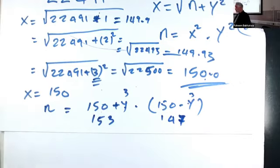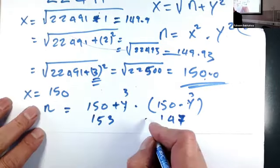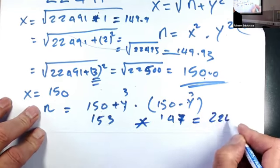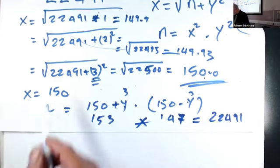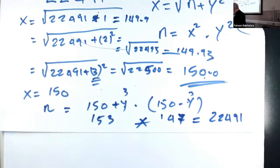So multiplying those two prime numbers will get us 22491. And that's what we started with.